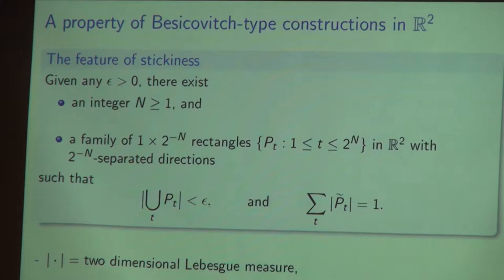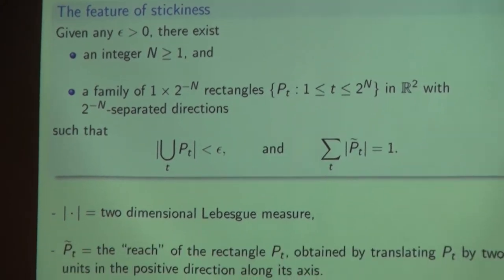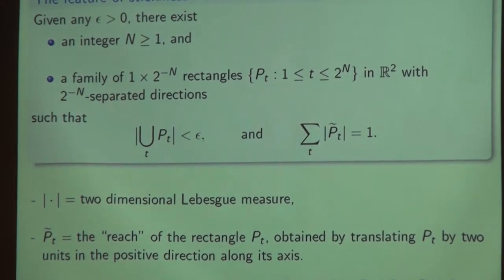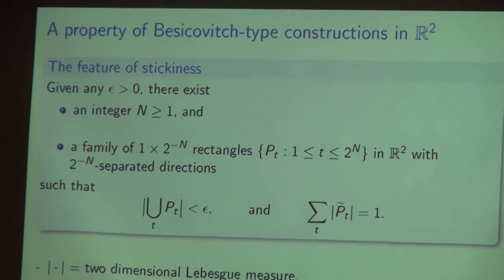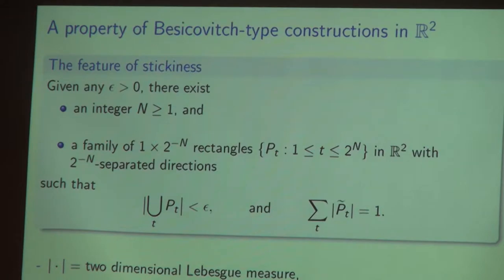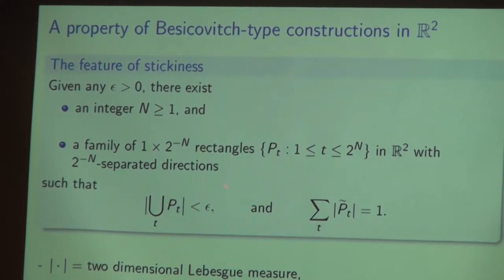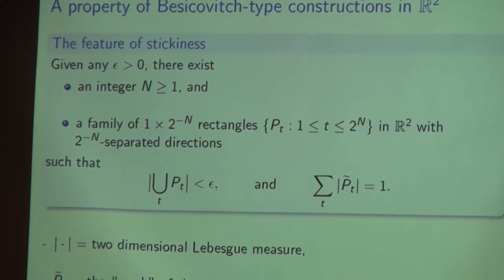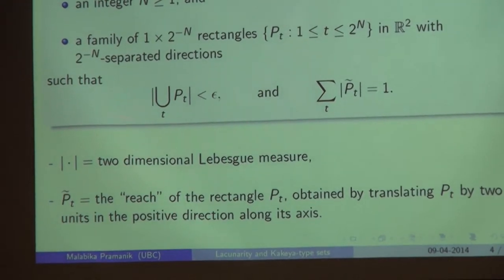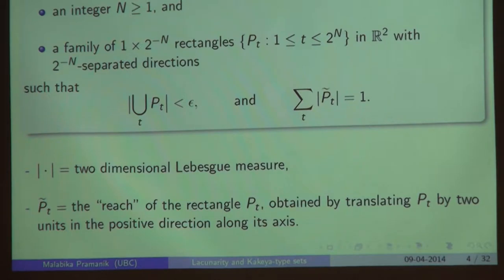The word 'stickiness' is not my coinage — there is actually a property called 'sticky' in the literature, and you'll see in a second why it's called the feature of stickiness. This is a property of a Besicovitch-type construction in R². Fix any positive epsilon. Then you can find an integer N and a bunch of rectangles of dimensions 1 by 2 to the power of minus n, all pointing in different 2-to-the-minus-n separated directions, with the following feature: these rectangles have an enormous overlap, so the union of these rectangles has area smaller than this prefixed epsilon.